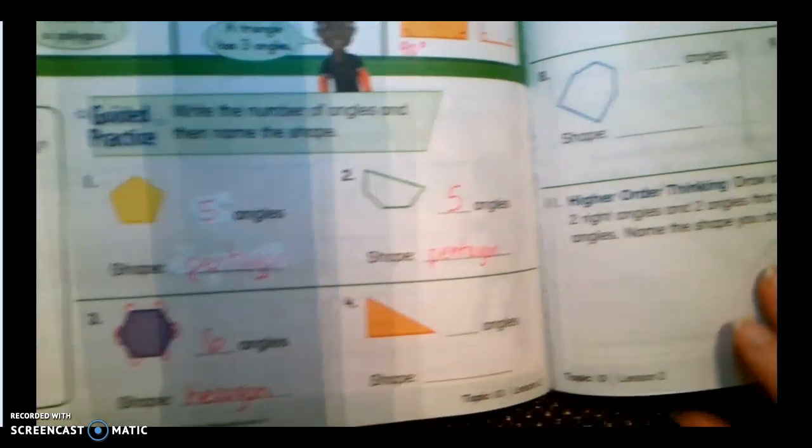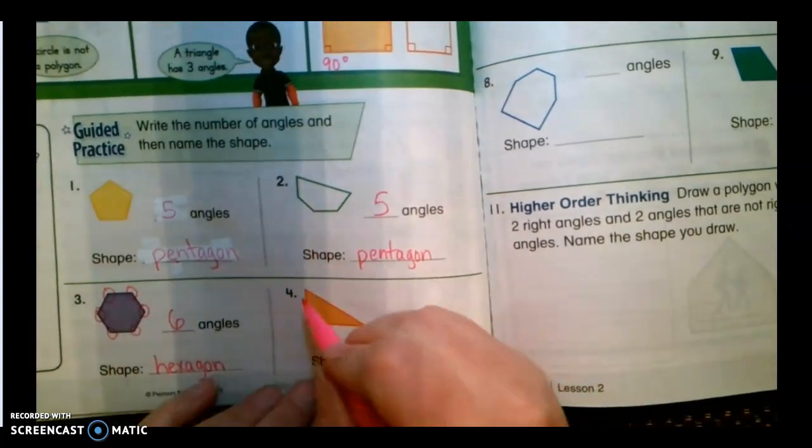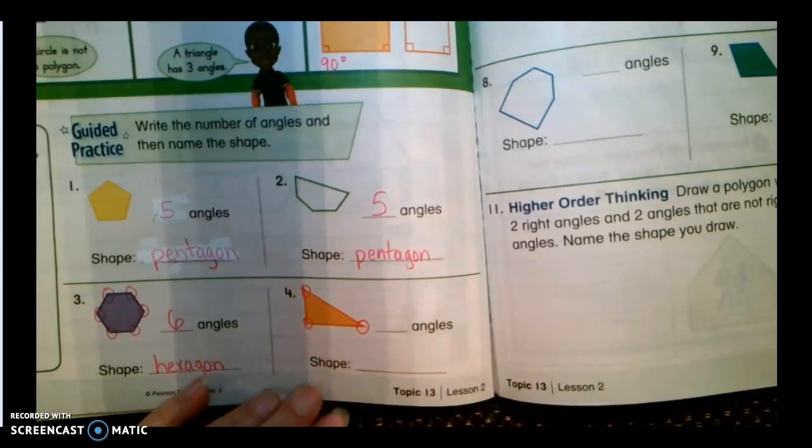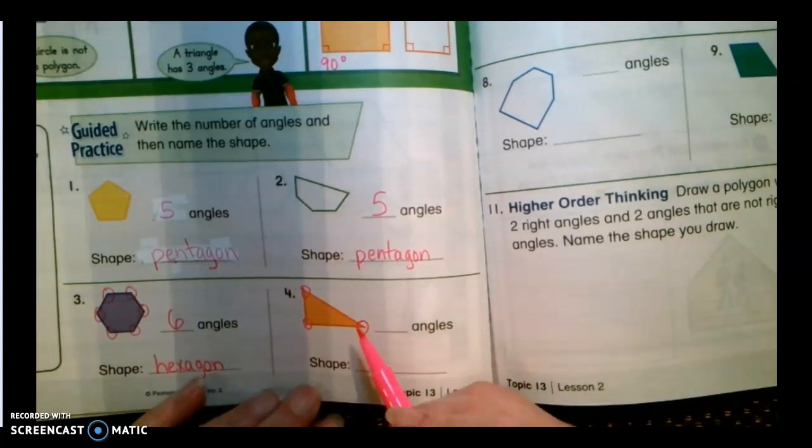Then we move on to one of our easier shapes. This has one, two, three angles. Remember, these are also called vertices. We can measure the vertices and give the measurement of the angle.